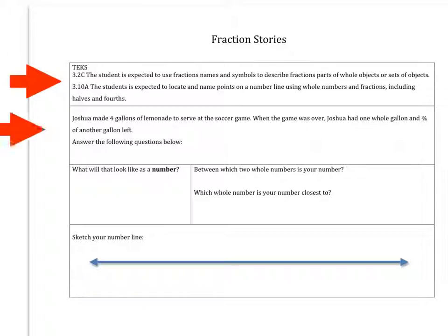So in this story here, Joshua made four gallons of lemonade to serve at the soccer game. When the game was over, Joshua had one whole gallon and three-fourths of another gallon left. We're going to answer the following questions. The first question asks, what will that look like as a number?